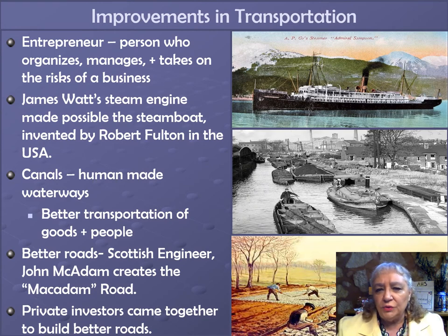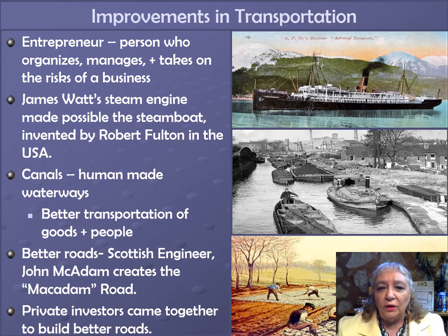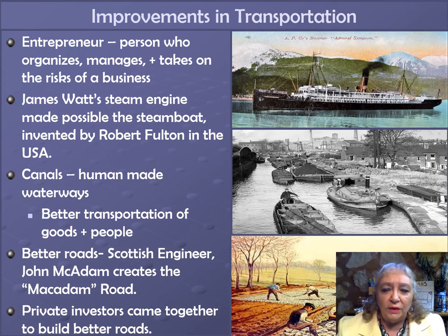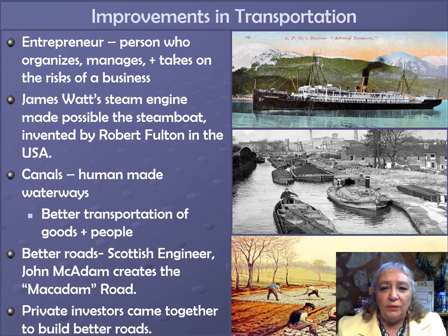Progress in the textile industry spurred other industrial improvements. The first was the steam engine invented by James Watt, a mathematical instrument maker at the University of Glasgow in Scotland. After thinking about the problem for two years, in 1765 Watt figured out a way to make the steam engine work faster and more efficiently while burning less fuel. In 1774, Watt joined with a businessman named Matthew Boulton, an entrepreneur — a person who organizes, manages, and takes on the risk of a business. Boulton paid Watt a salary and encouraged him to build better machines.